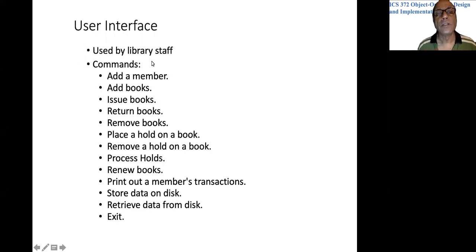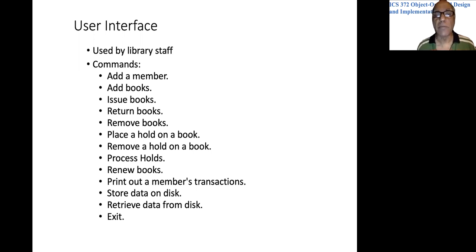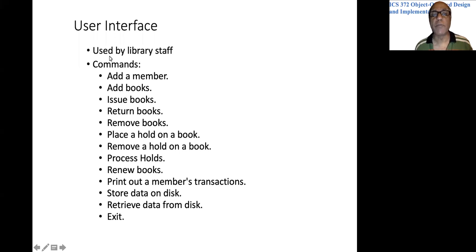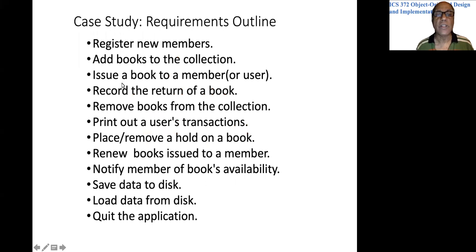Now that we have talked about what the library does, let's talk about what the user community is interested in creating. We need to create for them an interface — a library system that would be used by the library staff. This is a very elementary library system and also not very current in the technical sense. The members of the library don't use the software system to check out books or return books. Everything is done by the library staff, and the commands would pretty much reflect all the business processes from the previous slide.